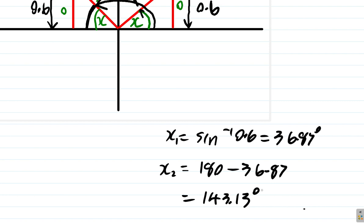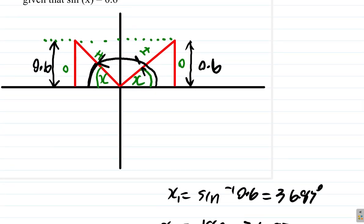So, it is 143.13 degrees. So, there are two angles here: 36.87 and 143.13. Note that if you tried it in the third quadrant here it would be a negative because this side is below the x-axis, and if you tried it in the fourth quadrant you'd also get a negative 0.6.